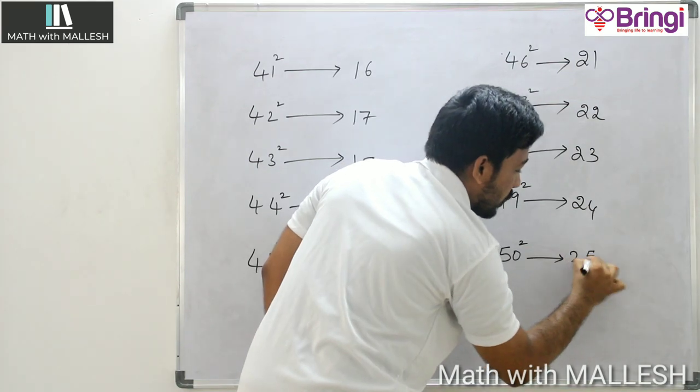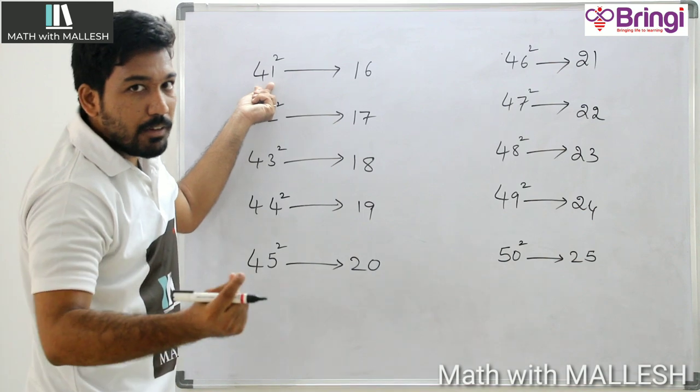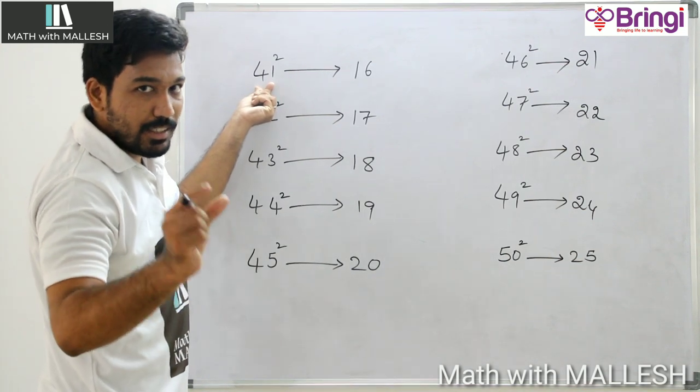24 and 25. Now 41, take 50 as a base. How much less? 9.